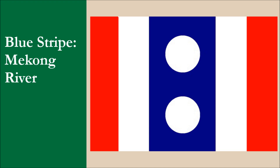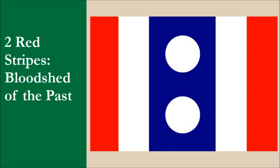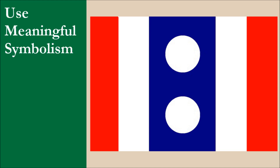The blue stripe represents the Mekong River, which forms the border between Thailand and Laos. The river runs roughly from north to south, and the stripe being vertical helps to convey this. The two white stripes represent religion and the purity of Buddhism. The two red stripes represent the bloodshed of the people in the past, and the hope that blood will only represent life in the future. Overall, this is very good symbolism. For this principle, the flag gets 10 out of 10.